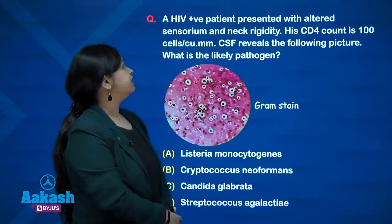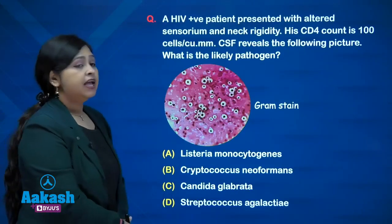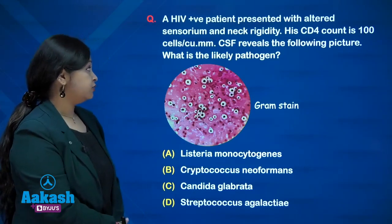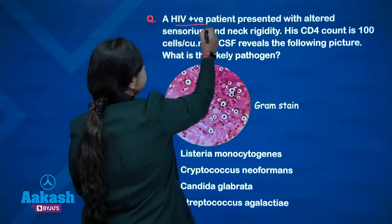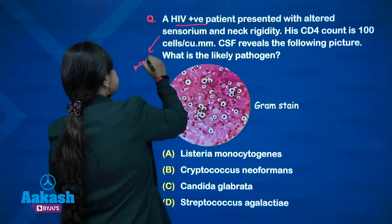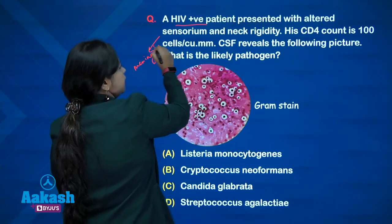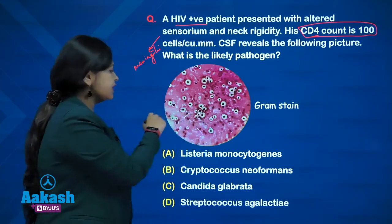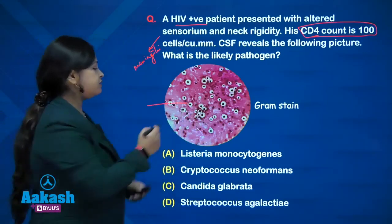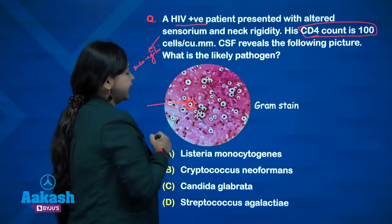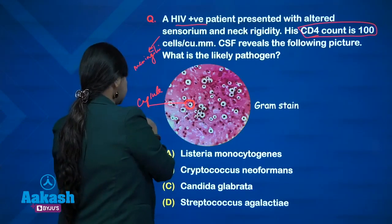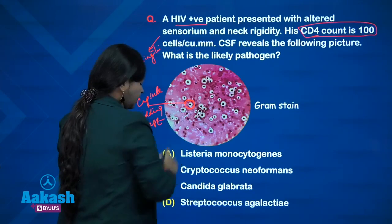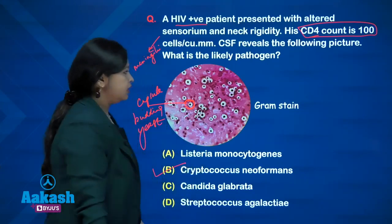Another question: an HIV positive patient presented with altered sensorium and neck rigidity. His CD4 count is 100, which is very low. CSF reveals a Gram stain image showing blue-colored structures with a surrounding halo — the unstained area indicating the capsule — and budding yeast. What is the likely pathogen? Hence the diagnosis here is Cryptococcus neoformans.